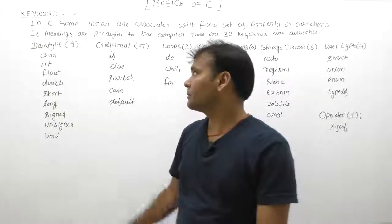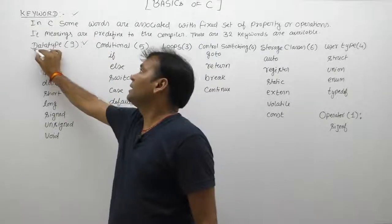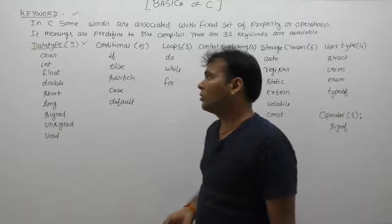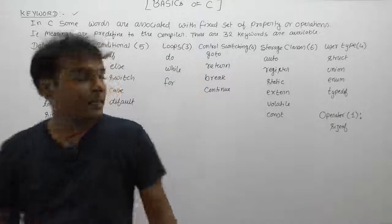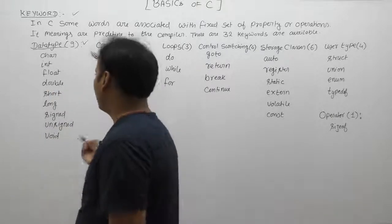First, there are 9 keywords reserved for declaring data types: char, int, float, double, short, long, signed, and unsigned. These keywords are used for declaring variables.